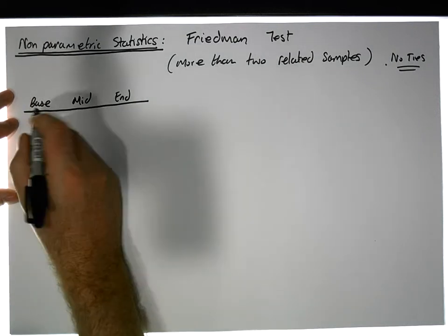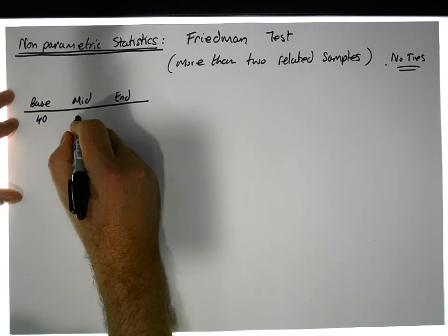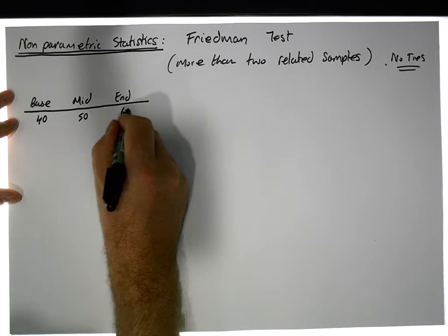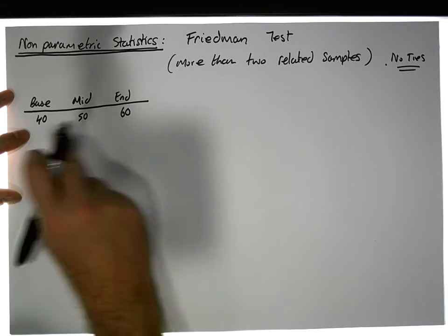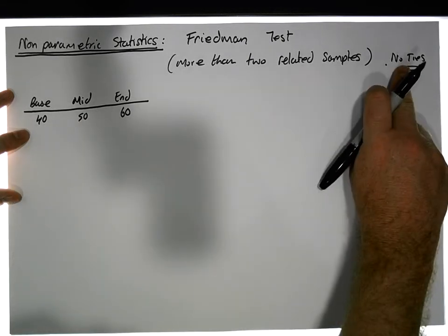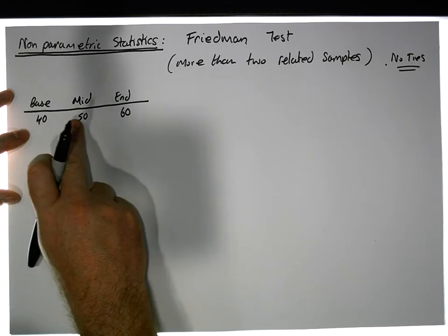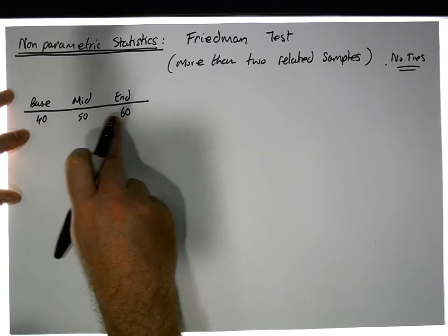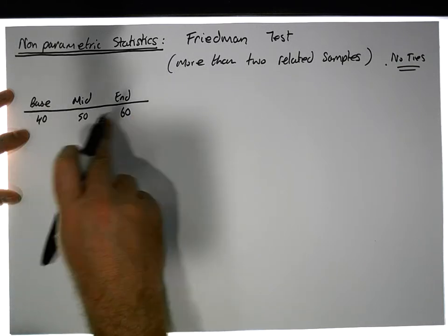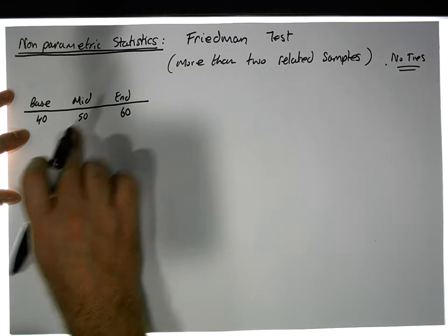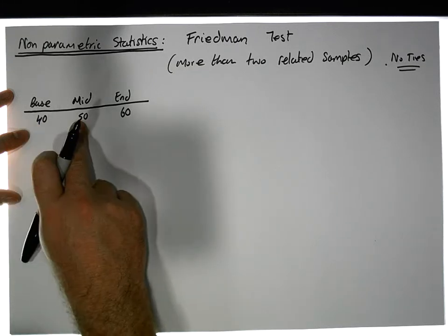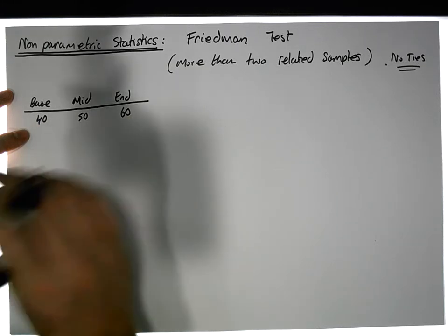For our argument, say the first student scored 40, followed by 50, followed by 60. In this example we're assuming there's no ties, so the change for the particular student across the measurement points—there's no ties across it. We wouldn't have 40, 40, 60—that was a tie there—so there's no ties.